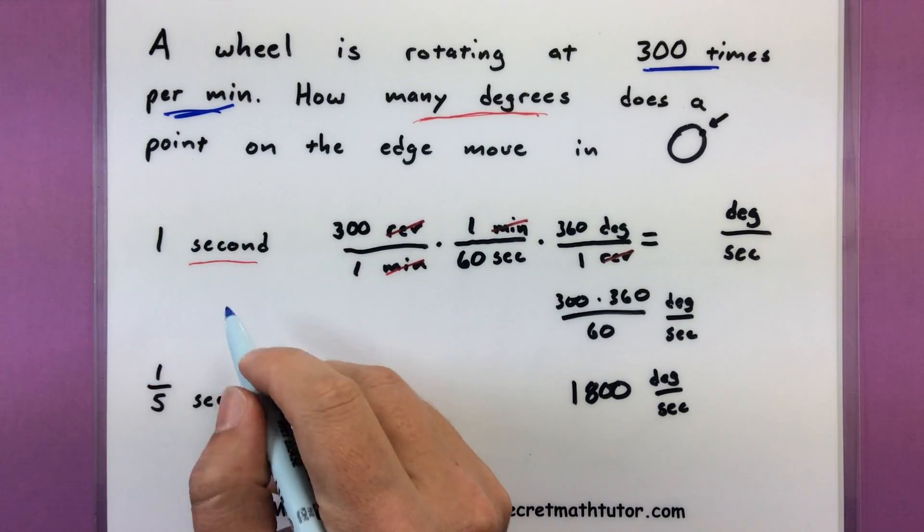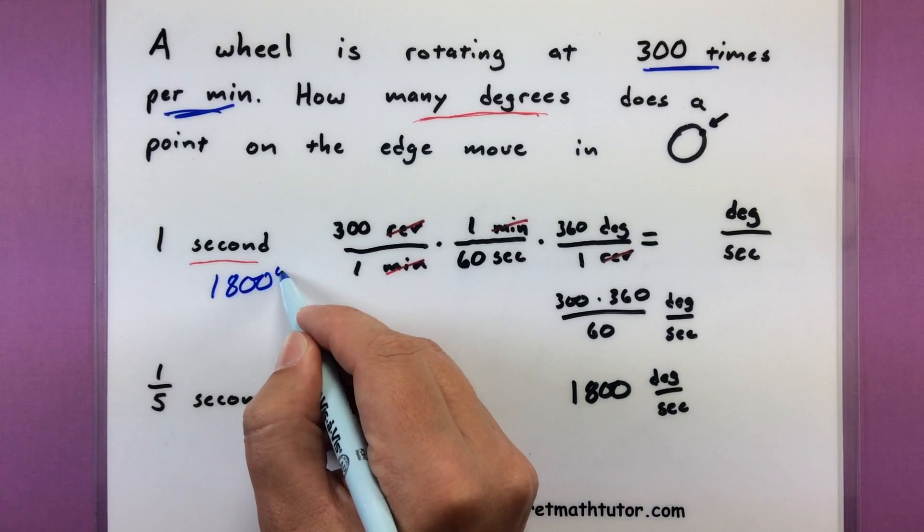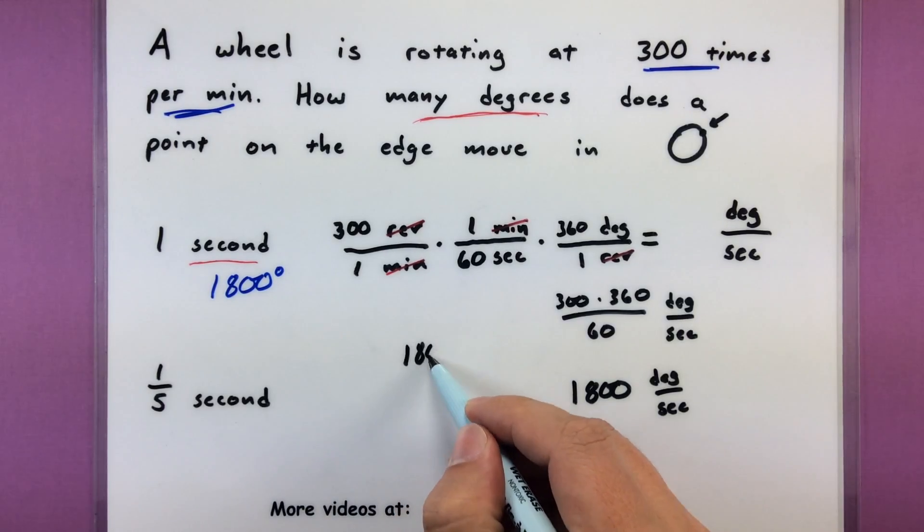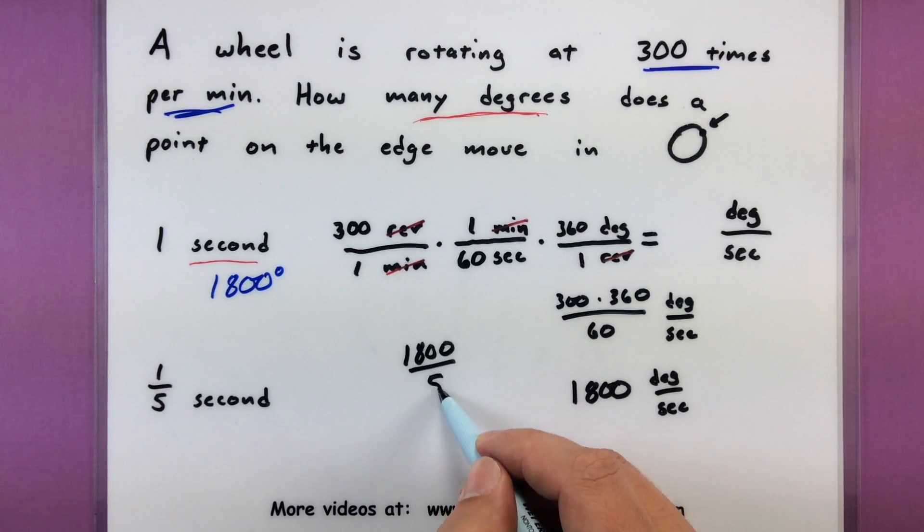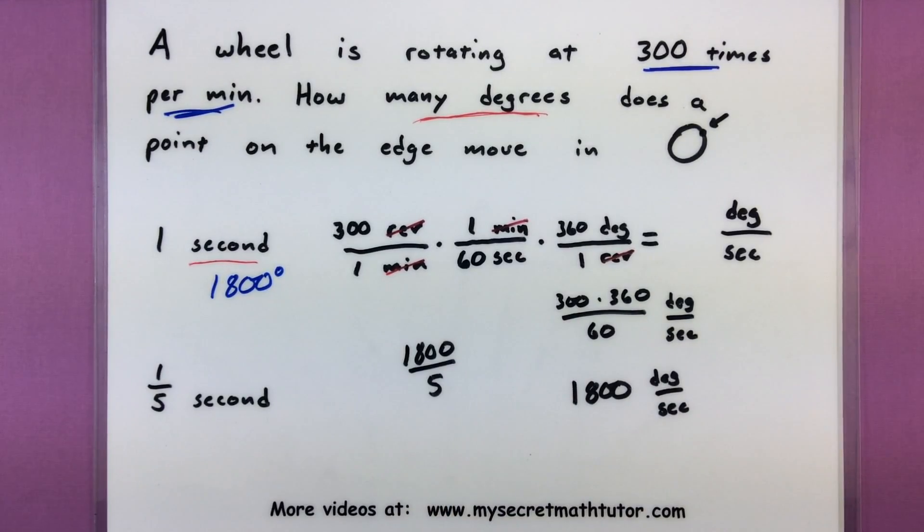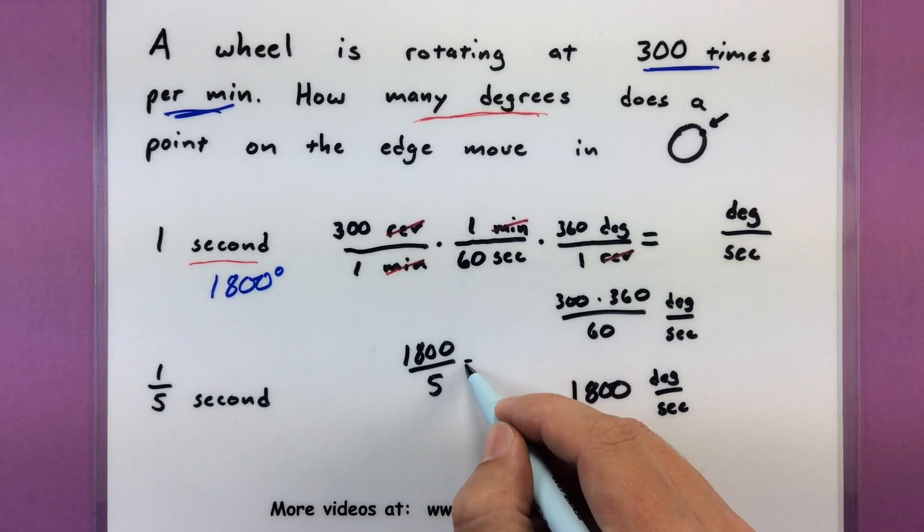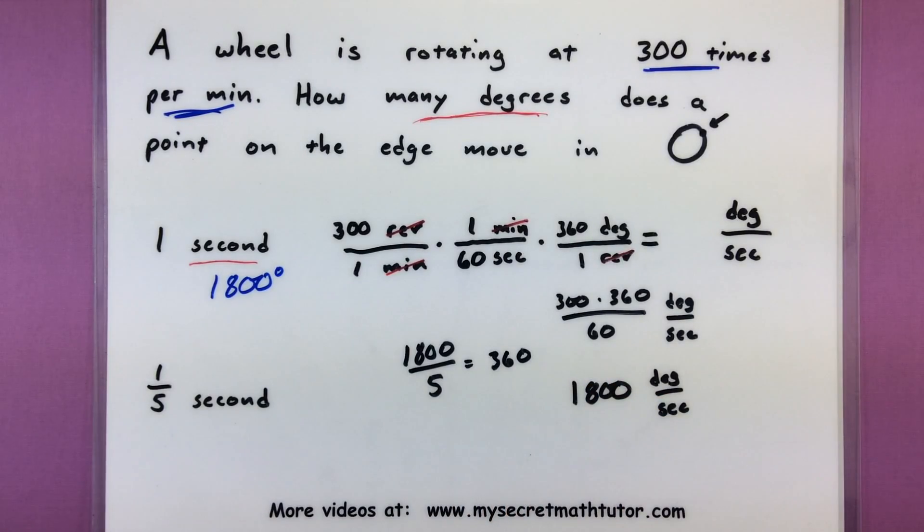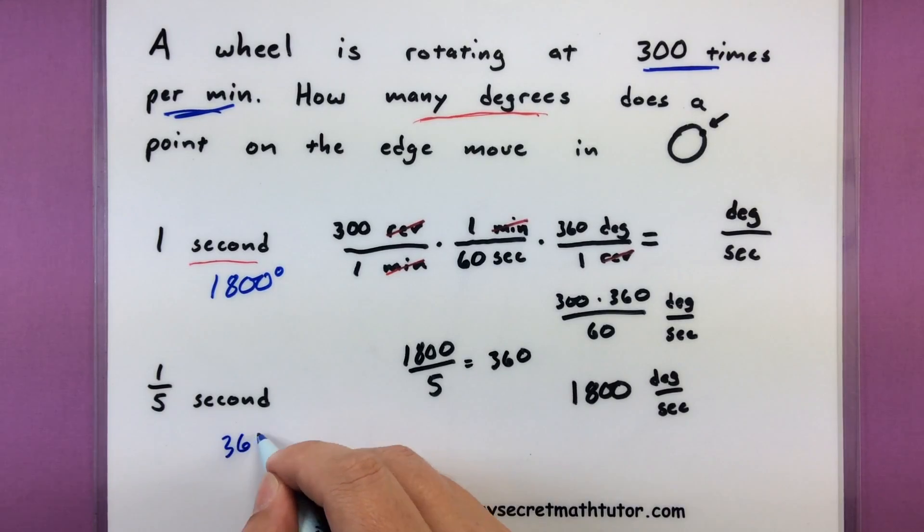Now, how far is it going to travel in just one fifth of a second, even shorter amount of time? Well, if I know how far it travels in one second, I can take that value, divide it by five, and now I figure out how far it's traveled in just one fifth of a second. And of course, it's going to be a lot smaller. I'll just get 360 degrees. So that'll be my answer for the second one.